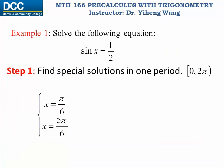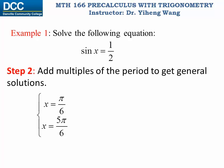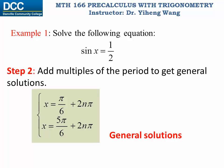Now we have our special solutions. Remember, all six trigonometric functions are periodic functions, and the function values repeat themselves period after period. Therefore by applying the periodic function property, the next step is to add multiples of the period to these special solutions in order to get general solutions. Since the sine function has a period of two pi, we add 2nπ to these special solutions, where n can be any integer — zero, negative, or positive. And now we have found the general solutions to this equation.